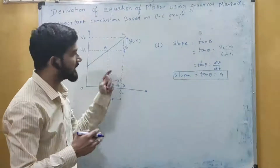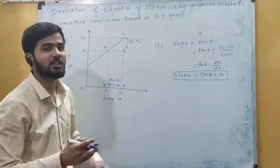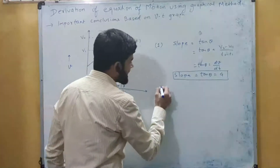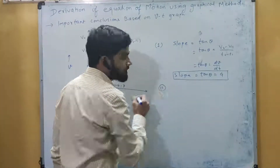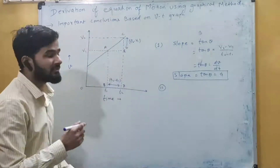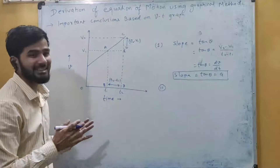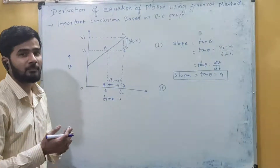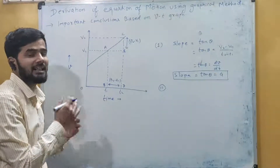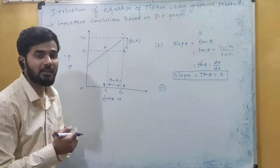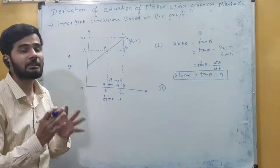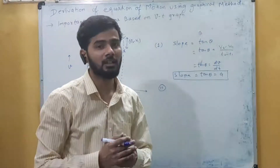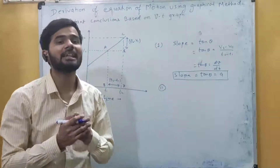So by directly calculating the slope of the curve we can find the acceleration. This is the first conclusion. The second conclusion is that we can also find the distance covered by that body from this graph — we can simply calculate the area under the curve to easily find the distance covered.